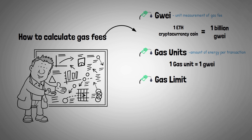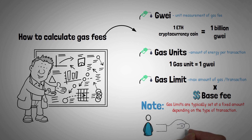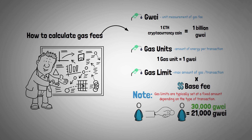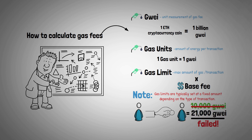Now for gas limit: the maximum amount of gas you are willing to spend on a given transaction, which is later multiplied by the base fee plus tip. Gas limits are typically set at a fixed amount depending on the type of transaction. A simple transaction, like transferring ETH from one user to another, would require a gas limit of 21,000 Gwei. If you set your gas limit at 30,000, you get 9,000 Gwei back after the transaction is completed. However, if you set the gas limit at 10,000 Gwei, the network would consume the 10,000 as it attempts to validate the transaction — the transaction will fail and you'll lose the Gwei consumed during the attempt.